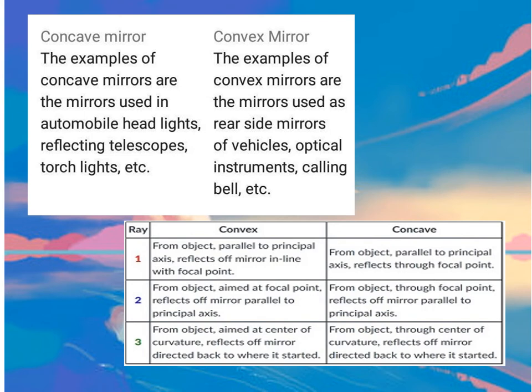The third ray is from the object aimed at the center of curvature, which reflects off the mirror directed back to where it started. On your module, you'll have the diagram — kindly read and understand it.